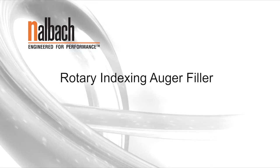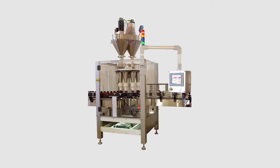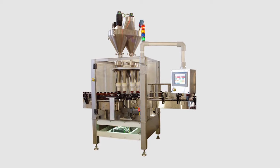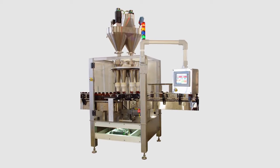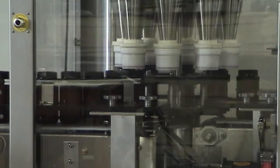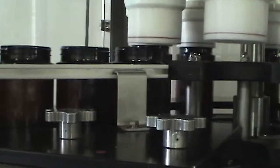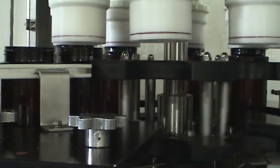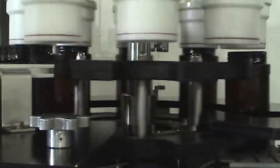The Nalbach I-Series Rotary Indexing Auger Filler is an economically priced system designed to provide high fill accuracy and minimum maintenance for moderate speed applications up to 100 containers per minute.